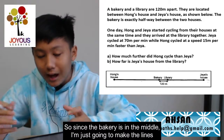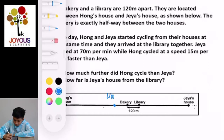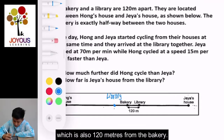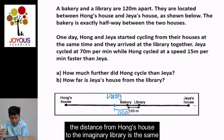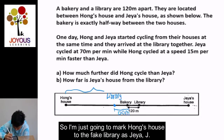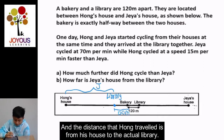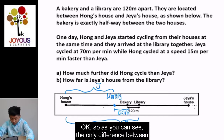Since the bakery is in the middle, I'm going to make the lines symmetrical. I'm going to draw an imaginary library which is also 120 meters from the bakery. The distance from Hong's house to the imaginary library is the same as Jaya's house to the actual library. I'm going to mark Hong's house to the fake library as 'J'.